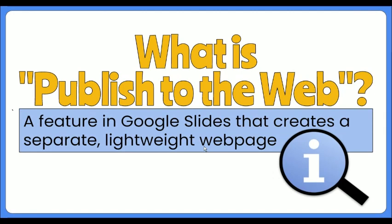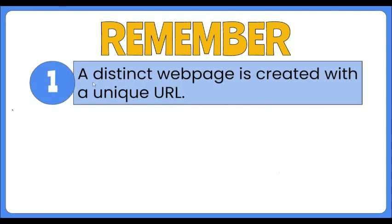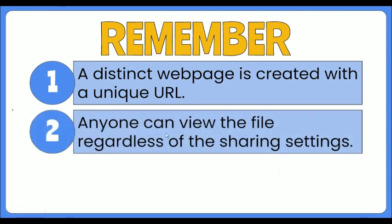Here are the things to remember when you publish your Google Slides file to the web. First, once a file is published, it creates a distinct web page with a unique address link. That link can be sent to many people to view the file, and you can also insert it in elements of your other files. Second, publishing a file makes it visible to everyone on the web. This means even if the sharing setting is private, everyone with a link can still view its contents. Therefore, be careful when publishing as it may disclose private or sensitive information.